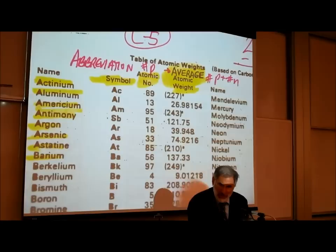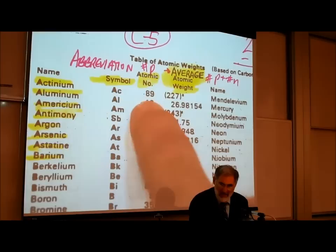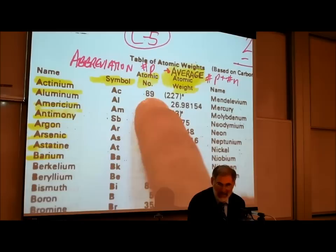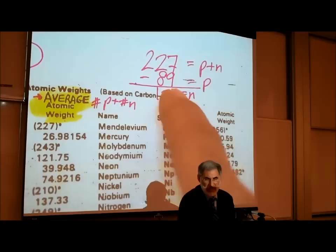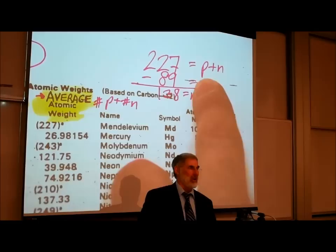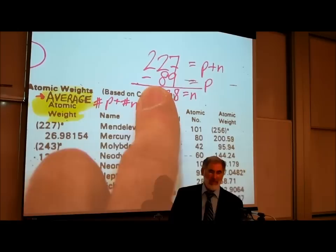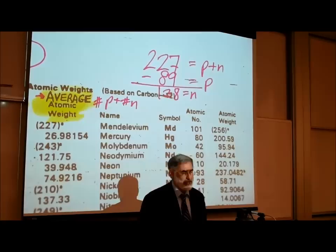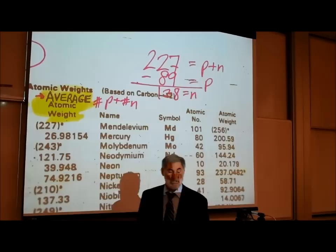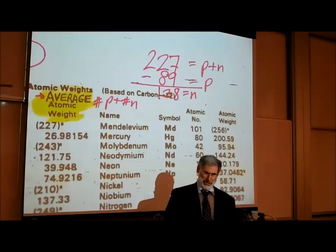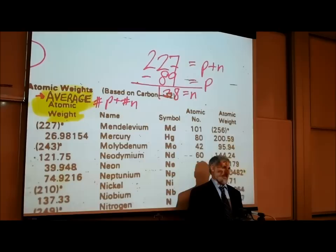In the case of actinium, the total protons plus neutrons is 227 — that's called its atomic weight. It has an atomic number of 89, which is the number of protons. Subtracting, it has 138 neutrons. Having more neutrons than protons does tend to make it unstable. Yes, you would be expected to figure out the number of neutrons on a test if given the atomic number and atomic weight.